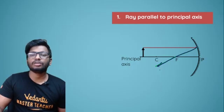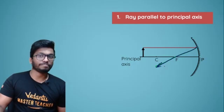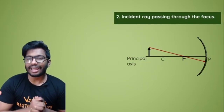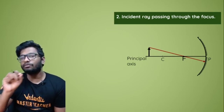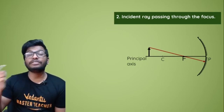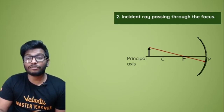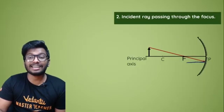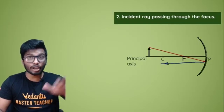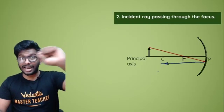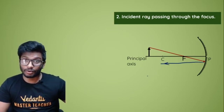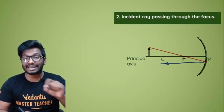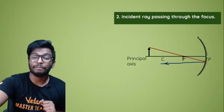The second scenario: a ray of light passing through the focus. If the incident ray is passing through the focus, then after reflection the ray of light will become parallel to the principal axis. It's simply the opposite — when parallel to the principal axis it passes through focus after reflection; when passing through the focus it becomes parallel to the principal axis after reflection.